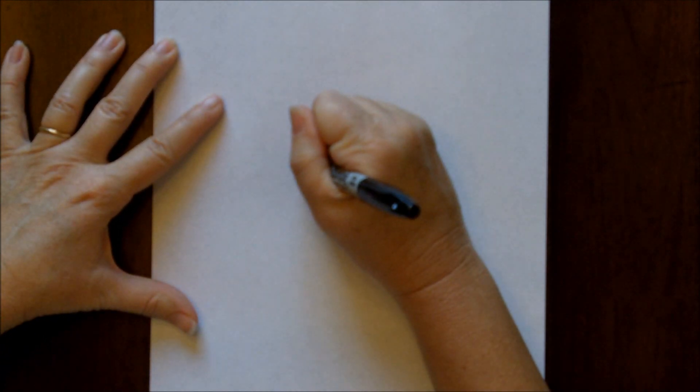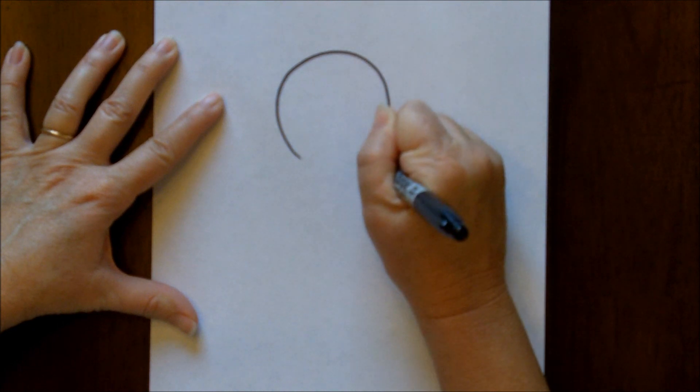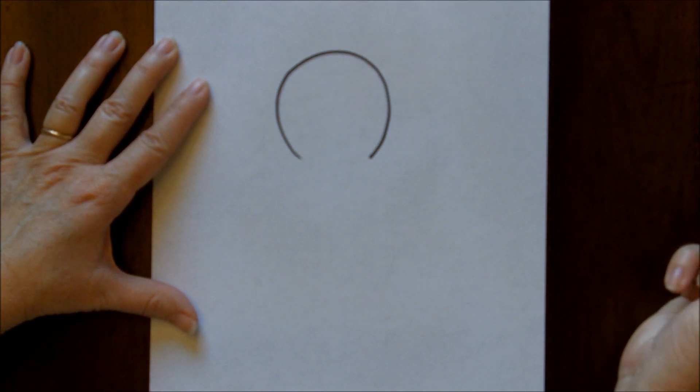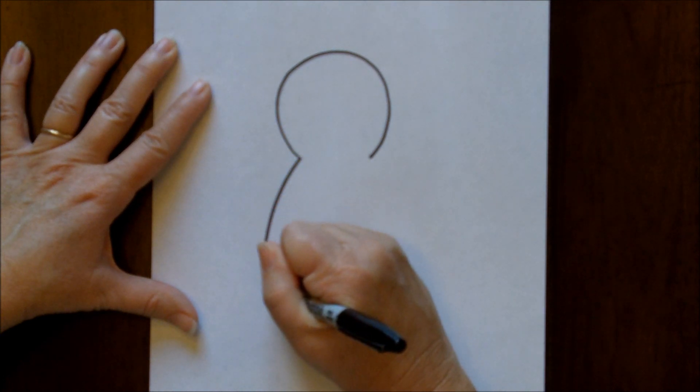We are going to start with an upside down letter C. That's going to be his head. And attached to that head we are going to make a body.